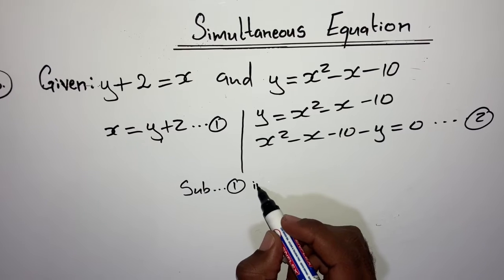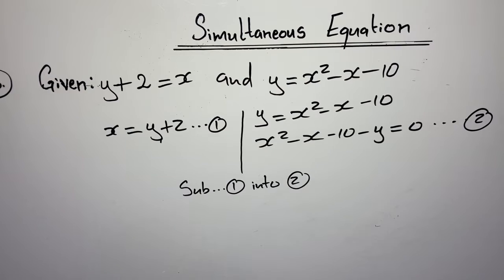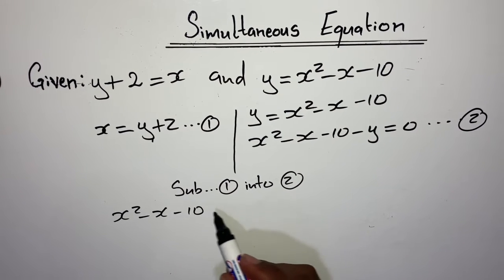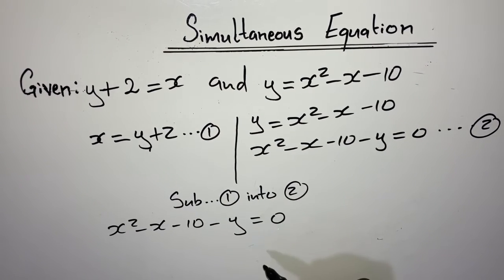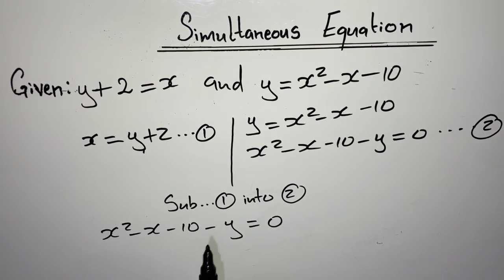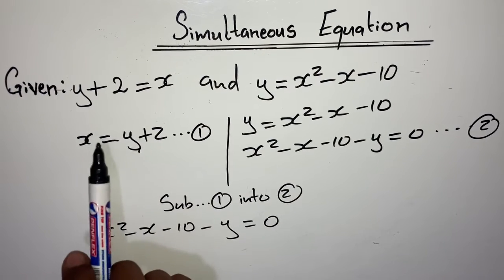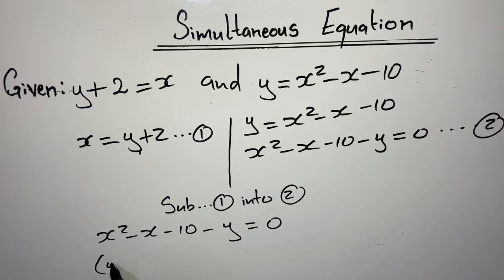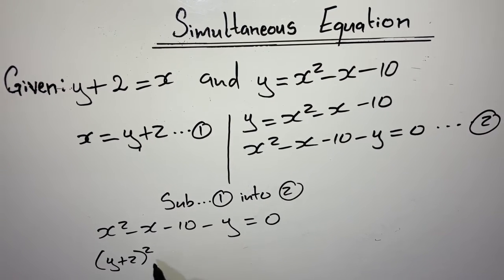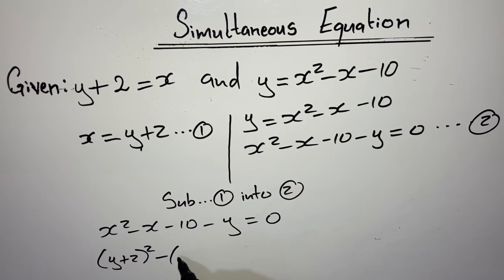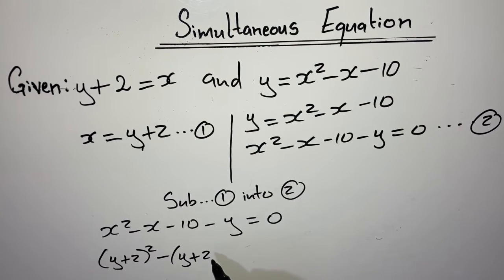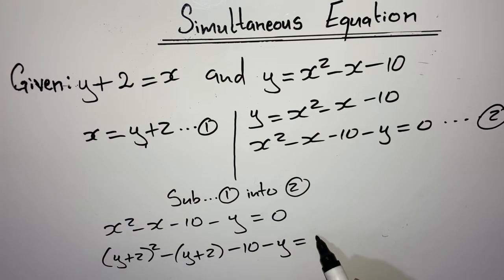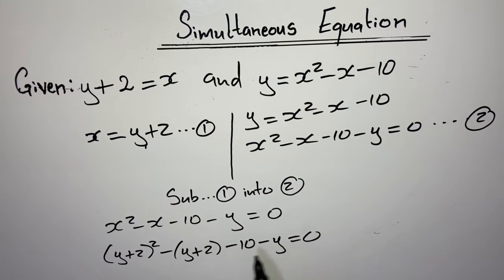Substituting the first y value, y = negative 4: x = negative 4 plus 2 = negative 2. I conclude: when x was negative 2, my y was negative 4.